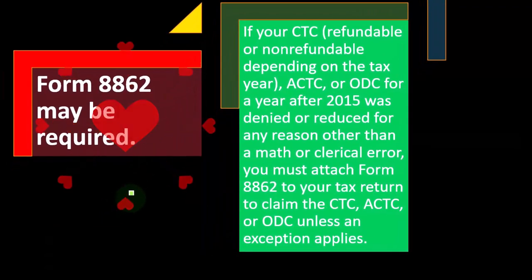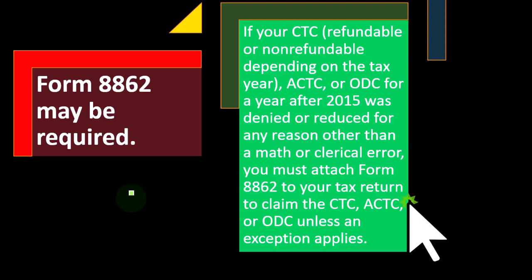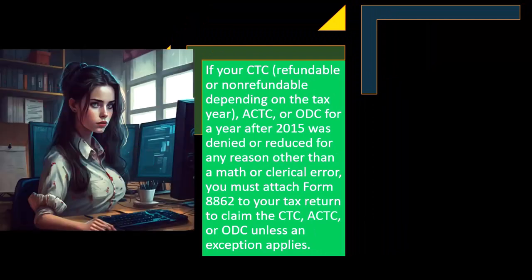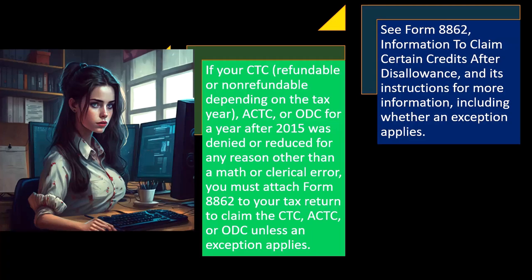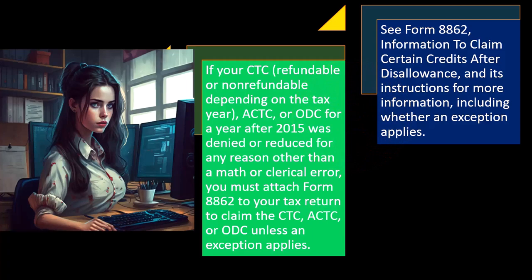Form 8862 may be required. If your CTC child tax credit, refundable or non-refundable depending on the tax year, ACTC additional child credit, or ODC other dependent credit for a year after 2015 was denied or reduced for any reason other than a math or clerical error, you must attach Form 8862 to your tax return to claim the CTC, ACTC, or ODC unless an exception applies. See Form 8862 and its instructions for more information, including whether an exemption applies.